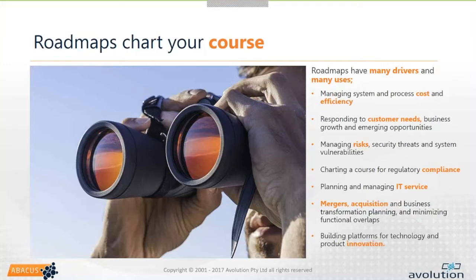Road mapping is what we refer to as a horizontal activity — something that every enterprise can do, large or small, across different industry verticals, whether you're in financial services, defence, or manufacturing. What fundamentally governs the way people structure their road maps is the objectives they're trying to meet or the business outcomes they're trying to achieve — whether that's around cost and efficiency savings, customer needs, risk, compliance, or planning an acquisition. It's about planning for the future, usually with some metrics, KPIs, or outcomes you're trying to optimise.